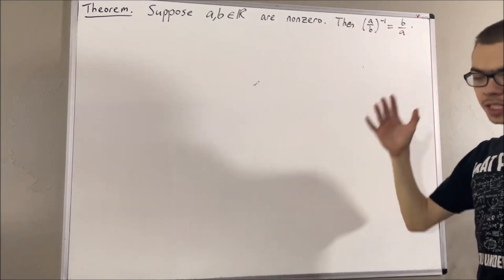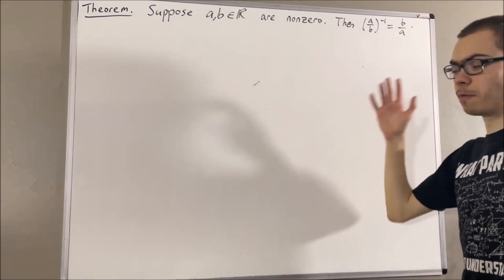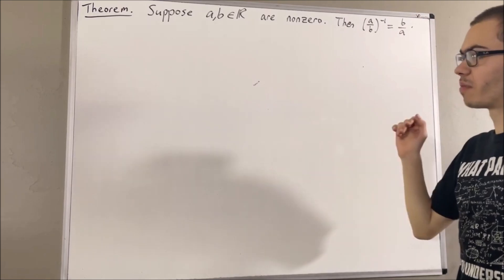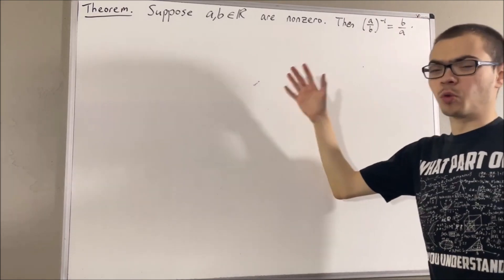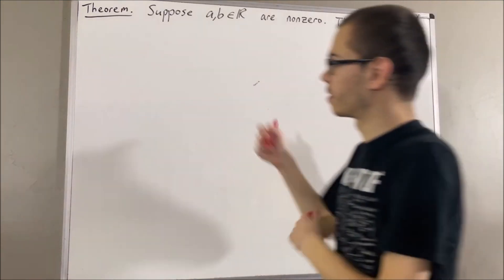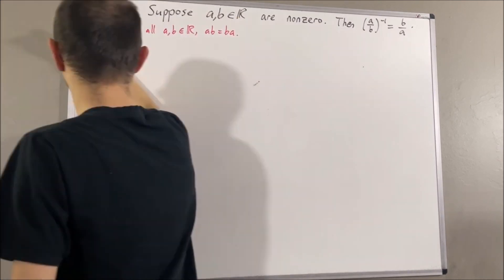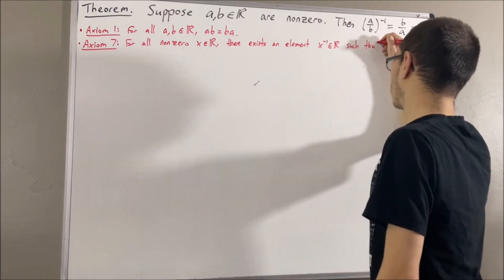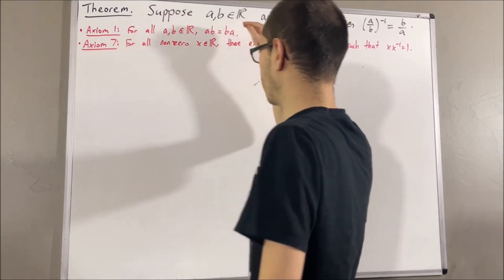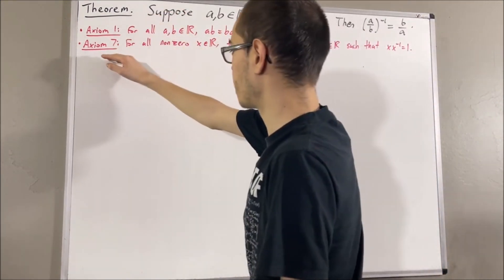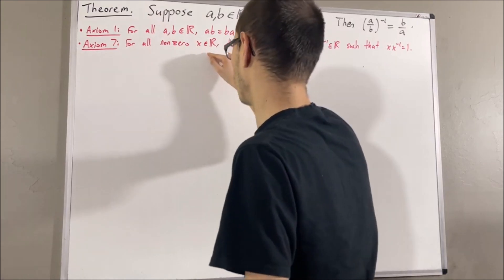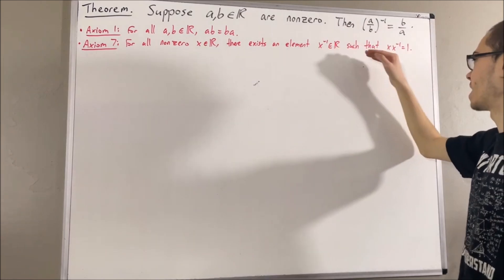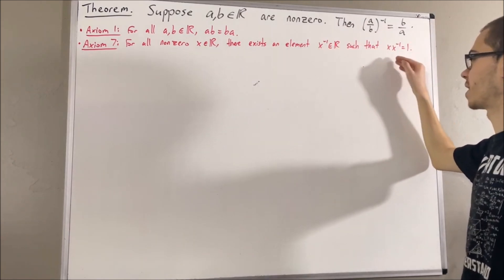Now in this series, we are using a list of 10 axioms for the real number system, and I'll leave that list of axioms in the description below. In this video, we are going to be using the following axioms. Axiom 1 is just the commutative law, and axiom 7 tells us: for all non-zero real numbers x, there exists a real number, which we call the reciprocal of x, that has the property that x times the reciprocal of x is equal to 1.